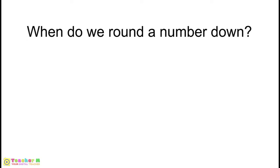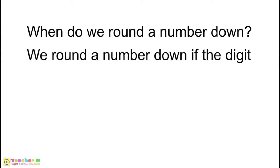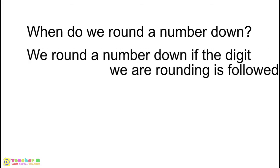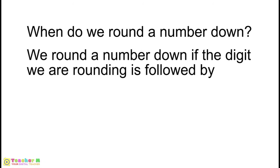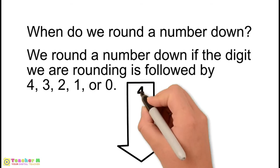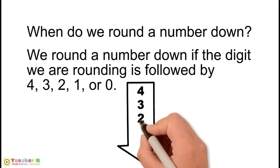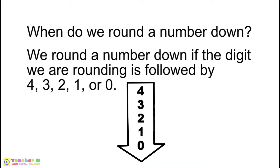When do we round a number down? We round a number down if the digit we are rounding is followed by 4, 3, 2, 1, or 0. Or, if the digit at the right side of the digit we are rounding is 4, 3, 2, 1, or 0.